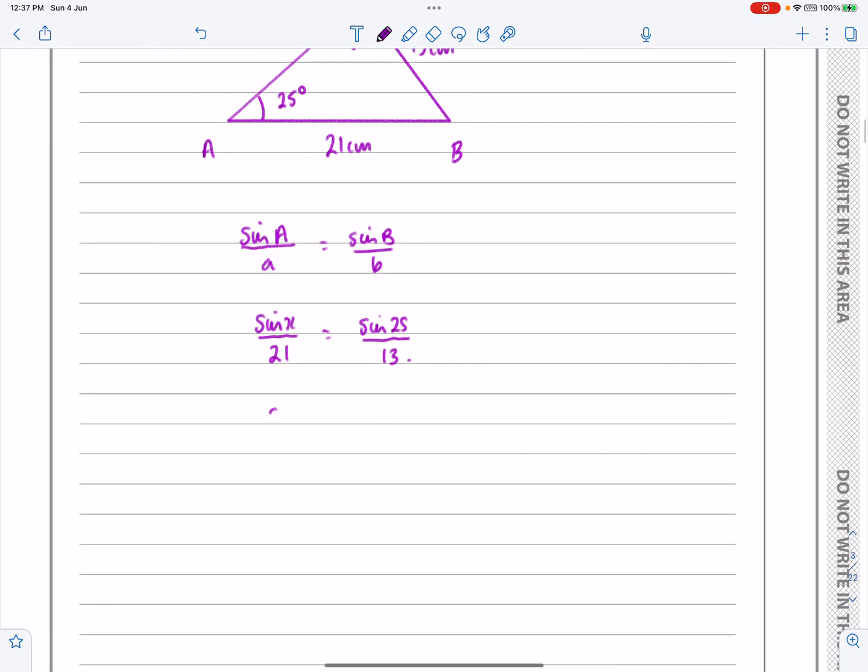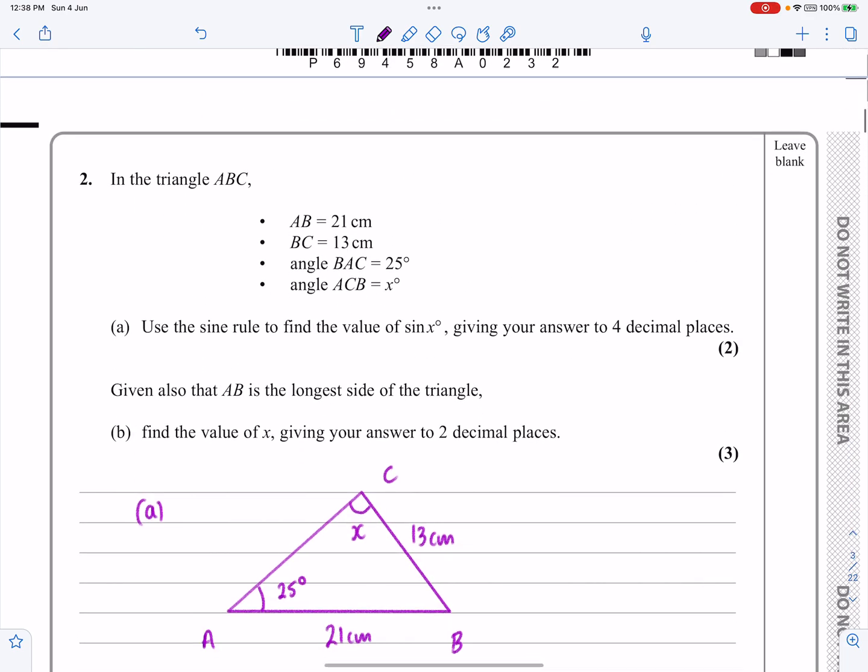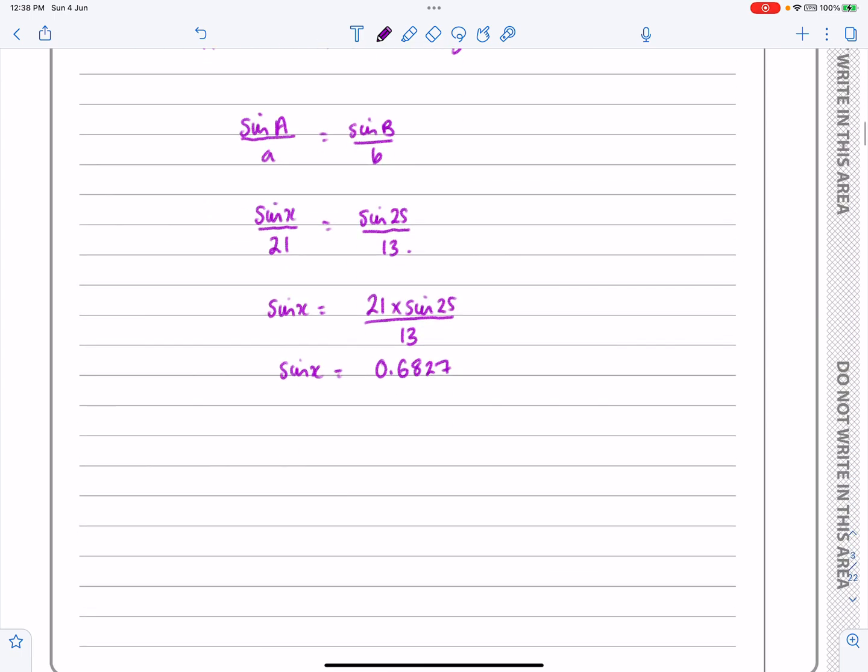And this is dead straightforward now. So sin X, this is just algebra. I know it looks complicated, but the 21 can go over the other side and become multiplied. So I've got 21 times sin 25 all over 13. And I can do that all in one go to then get my value for sin X. If you stick that into a calculator, and they said four decimal places there, so my answer works out to be sin X is equal to 0.6827.